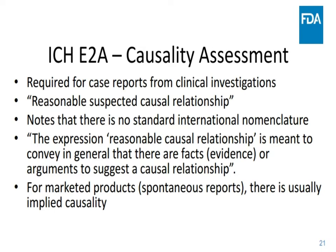The causality assessment in ICH E2A is required for case reports that come from clinical investigations. A reasonable suspected causal relationship is the term that's used. There's no standard international nomenclature for this. The expression "reasonable causal relationship" is meant to convey in general that there are facts or evidence or arguments to suggest a causal relationship. For marketed products and spontaneous reports, there's usually implied causality. But in the pre-market, investigational phase, there's no standard nomenclature, but it's generally meant to convey that there are facts or evidence to suggest a causal relationship.